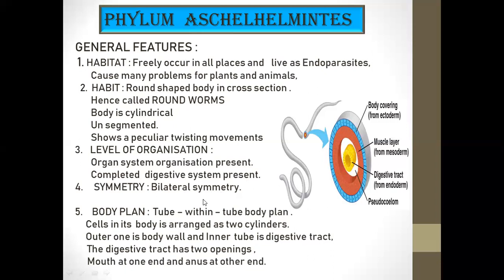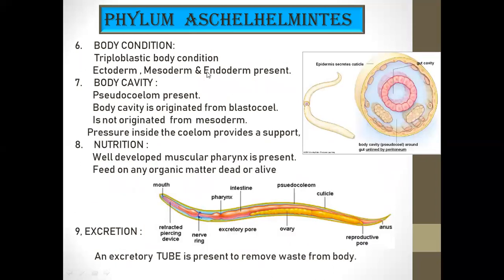The body plan is the tube within tube body plan. That is, the digestive tract is a tube present within the outer tube of the body wall. The body wall consists of three layers. The digestive tract has two openings — the mouth and the anus. That type of body plan is called the tube within tube body plan.